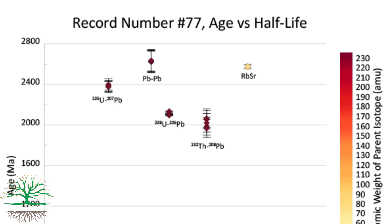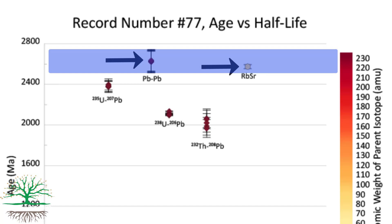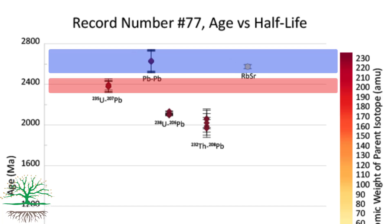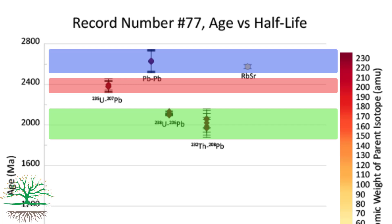Now let's take a look at a discordant example. The different system pairs here are highly discordant. At the top, the lead-to-lead system is concordant with the rubidium-strontium system, both recording ages at about 2,600,000,000 years. But their error bars do not overlap with any of the other three systems. The uranium-235 to lead-207 system is isolated at about 2,400,000,000 years. Then the uranium-238 to lead-206 pair records about 2,100,000,000 years, and the thorium-232 to lead-208 pair records about 2,000,000,000 years.